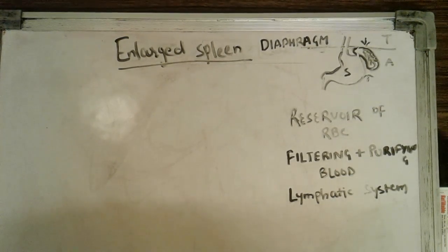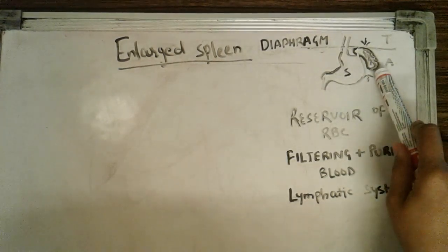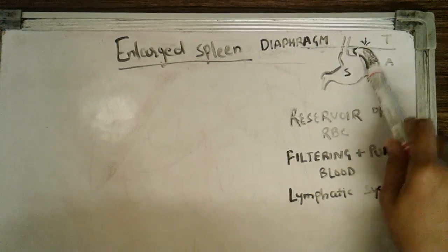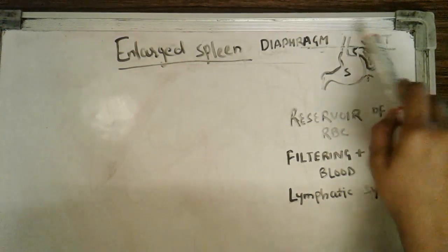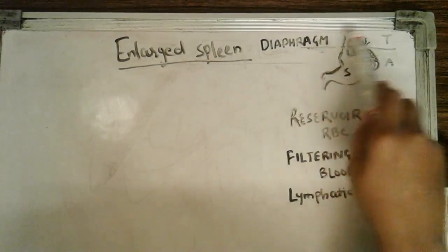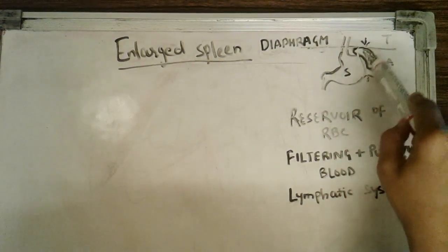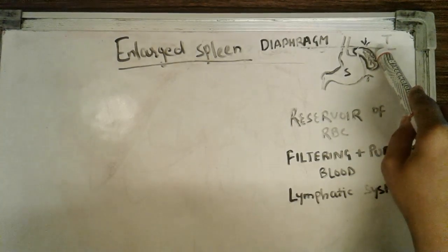First of all, you must know what is the spleen. The spleen is a small, fist-shaped, purple-colored organ that is present above our stomach, just below the diaphragm. The diaphragm is a partition that divides the thoracic cavity and the abdominal cavity of our body, and the spleen is present in the upper left part of our body.